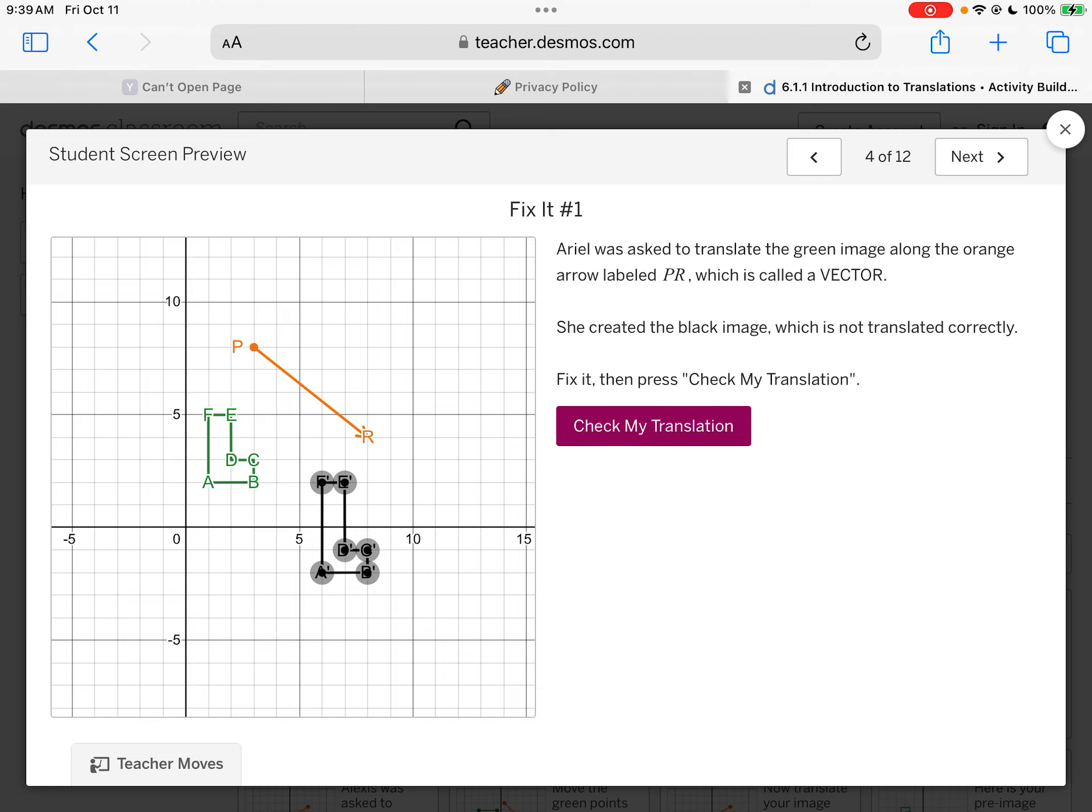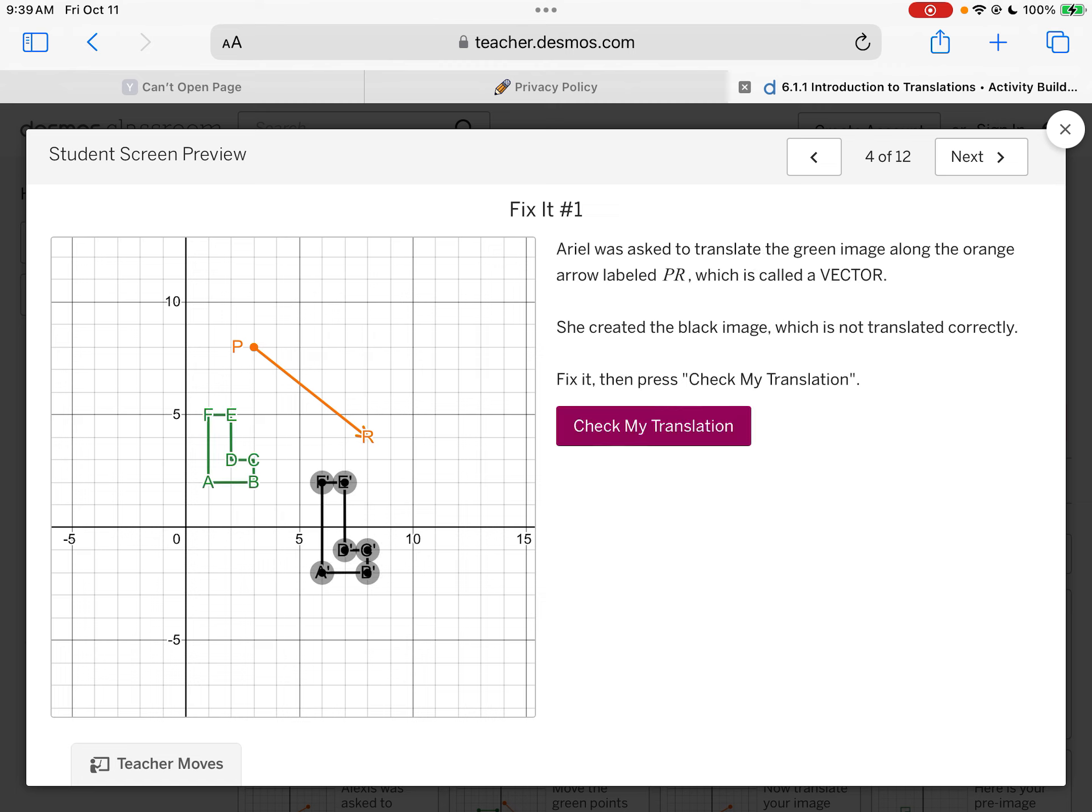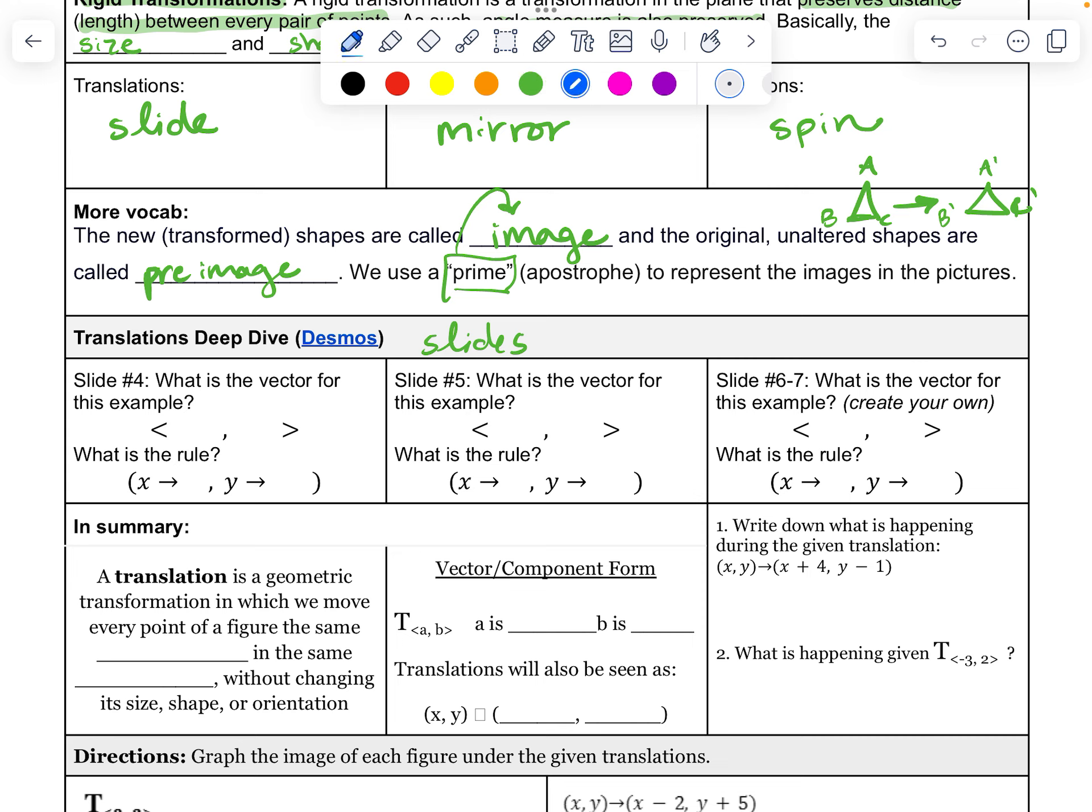Here, Ariel was asked to translate a green vector along the orange arrow labeled PR. So let's see if I check this translation. This is where all my points would need to show up. We went over some and down some. So we did not translate all of those points over. It's a slide. And if you look, this slide is telling me to go 1, 2, 3, 4, 5 to the right and 1, 2, 3, 4 down.